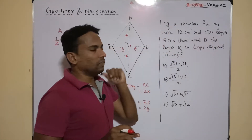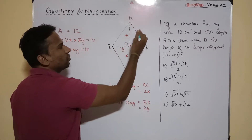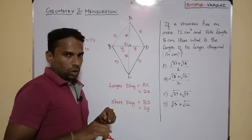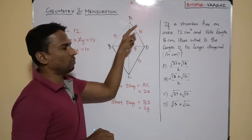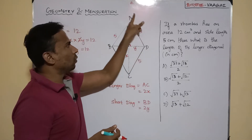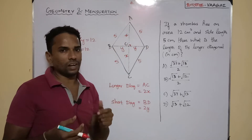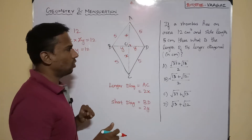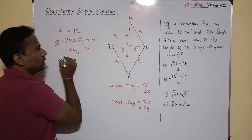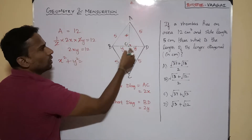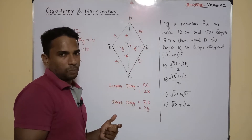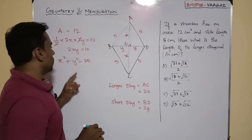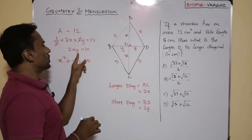The side length is 5, so each side equals 5. Now I can get a relation between x, y, and 5. The triangle AOD forms a right angle triangle, so I can apply the Pythagorean theorem. This gives x² + y² = 5² = 25. So we now have two equations: x² + y² = 25 (equation 1) and 2xy = 12 (equation 2).